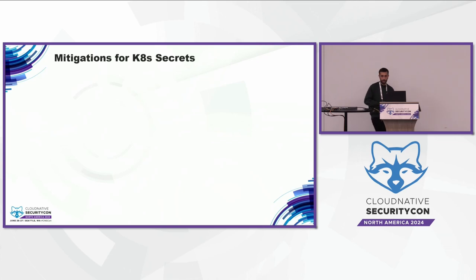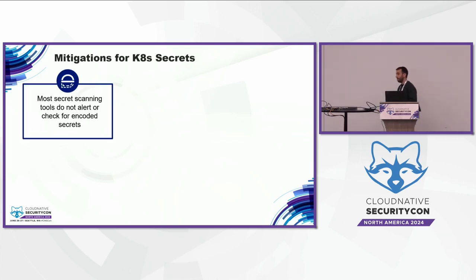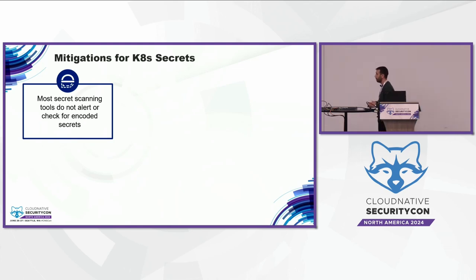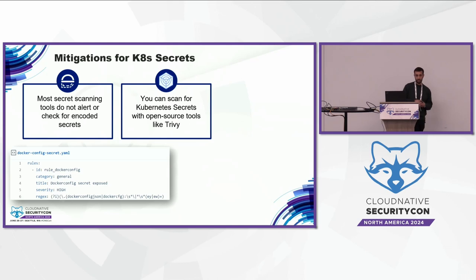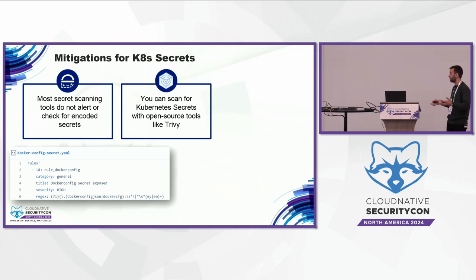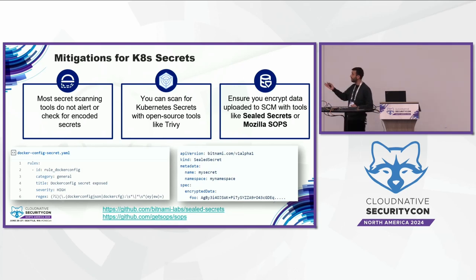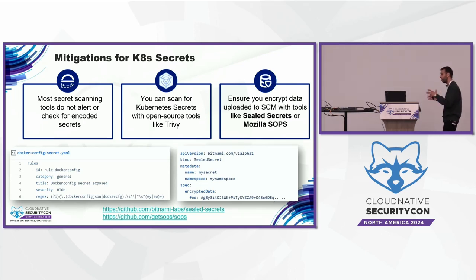How can we mitigate this kind of risk? We must understand that the problem here is not with Kubernetes secrets per se, but with the fact that most secret scanning tools will not find base64-encoded secrets. We must use secret scanning tools that have this capability or do it manually. After our research, we added a rule to the Trivy open-source vulnerability and secret scanner that can find this type of secret. If you still want to upload a Kubernetes file to a public GitHub repository, solutions like Sealed Secrets and Mozilla SOPS will encrypt your secret file — only developers or workflows with the private key will be able to decrypt it.